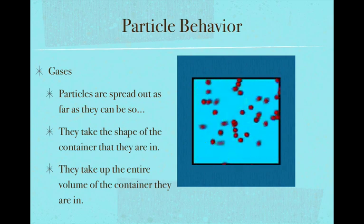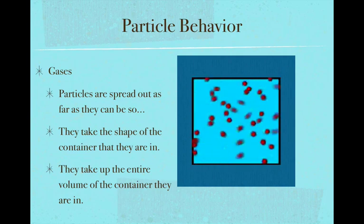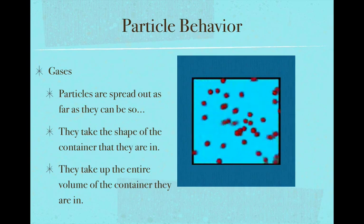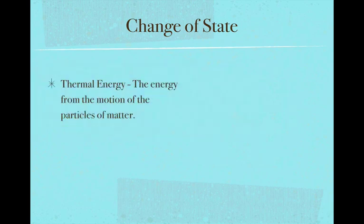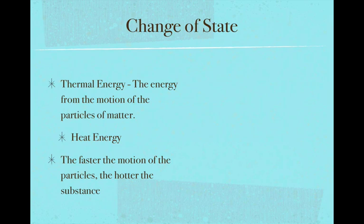There are a few famous gas laws that explain the relationship between the pressure on a gas and its volume. Now, we can change the state of matter through the use of thermal energy — the energy a substance has because of the motion of its particles, often referred to as heat energy. The faster the particles are moving, the hotter the substance is. When we heat substances up, the particles begin to move faster, they have higher thermal energy, and if heated enough, they'll change from one state to another.